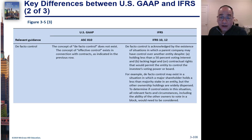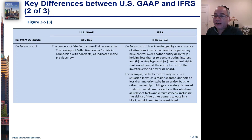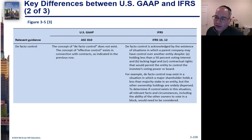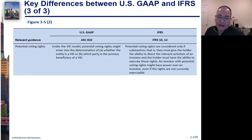The concept of de facto control doesn't exist in US GAAP, but we have the idea of effective control. In IFRS, you have what's called de facto control — situations in which a parent company may have control over another entity despite holding less than 50%, lacking legal or contractual rights that permit it to control the investee's voting power or board. IFRS wants you to look at the substance, and if you have de facto control, then you need to consolidate. US GAAP does not consider that.